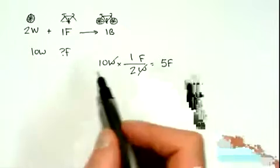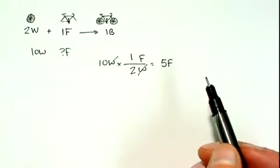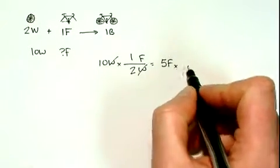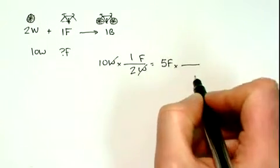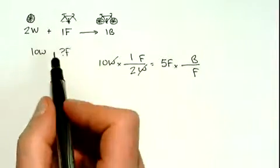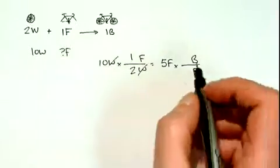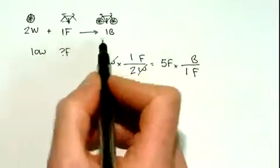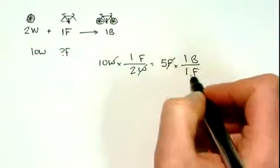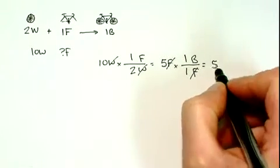I could take it a step further and say, well, if I have those five frames, how many bikes could I actually make? Let's write it out explicitly. I want to get rid of frames and get in terms of bicycles, and go back to the balanced equation — we'll keep coming back to this. For every one frame, I get one bike. So this will cancel, and I find that I can get five bicycles.